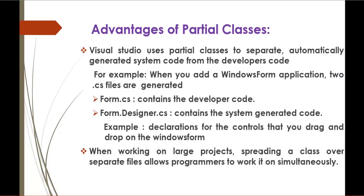Visual Studio uses partial classes to separate automatically generated system code from the developer's code. For example, when you add a Windows Forms application, two .cs files are generated: Form.cs contains the developer code, and Form.designer.cs contains the system-generated code. Now we will see a demo of it and how partial classes play an important role.